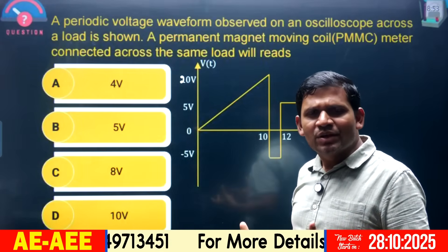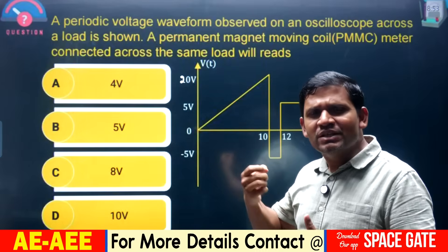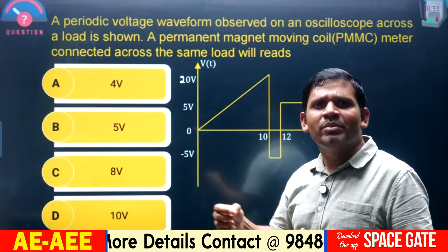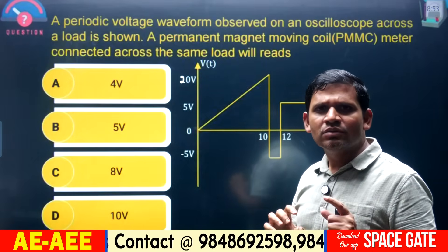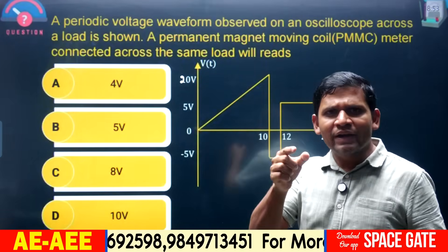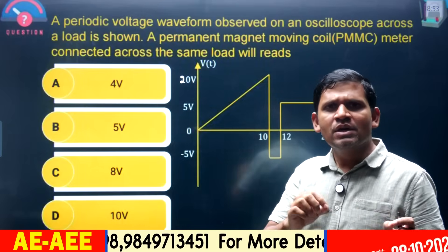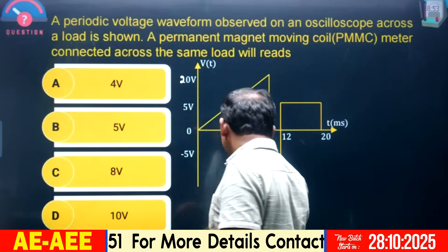The concept is very simple: any waveform applied to the PMMC, it reads the average value. That means for a given waveform, you have to find the average value — that is the reading of the PMMC.